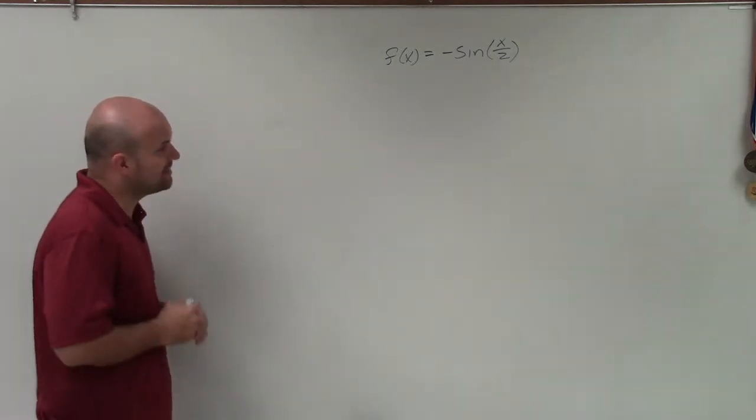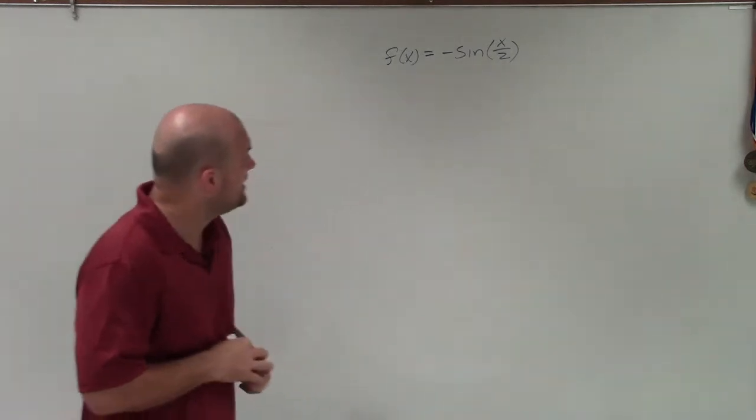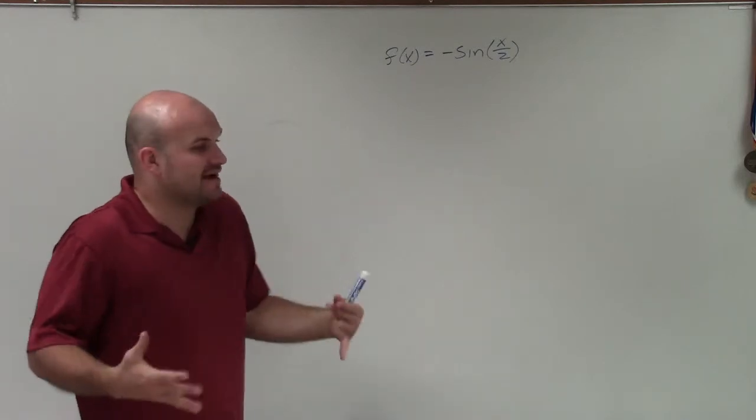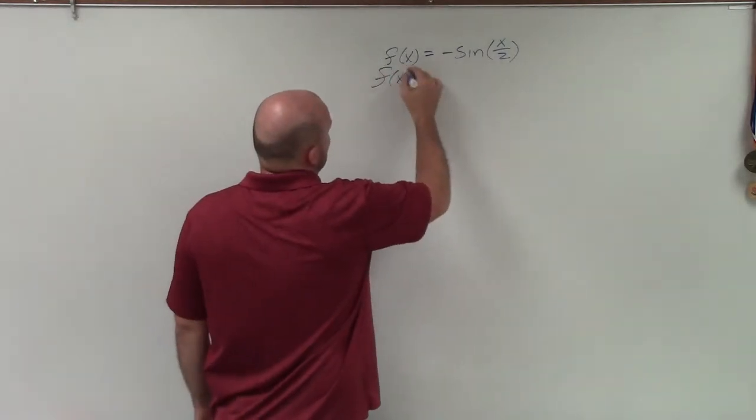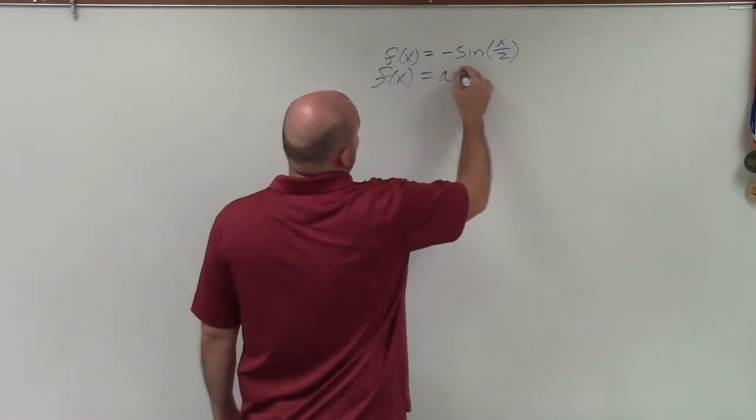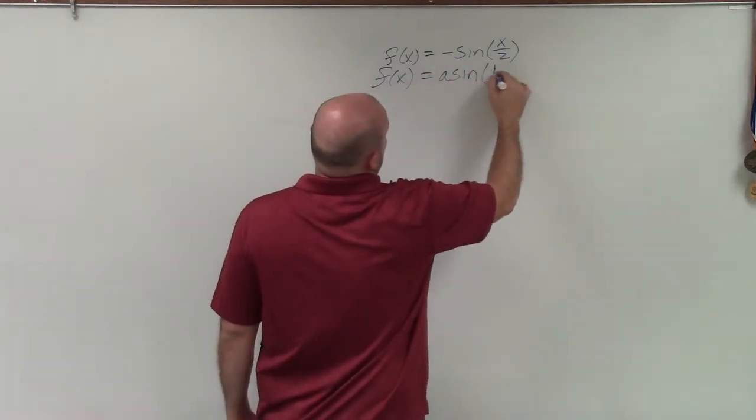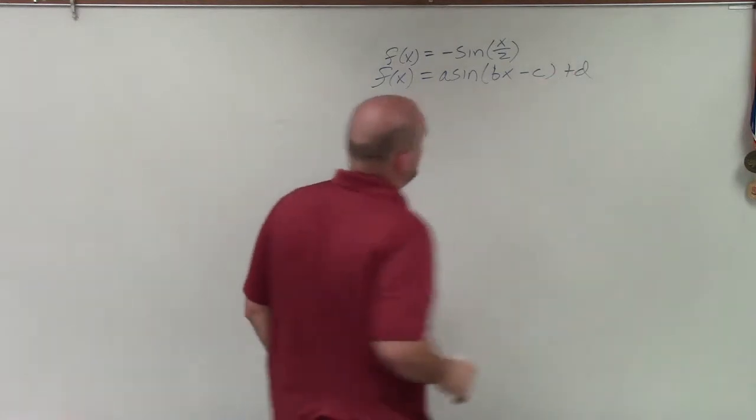So to go ahead and do a problem like this, the first thing that I need to do is identify what are going to be my transformations. So to do that, I write out my transformation form, which is f of x equals a times sine of bx minus c plus d.